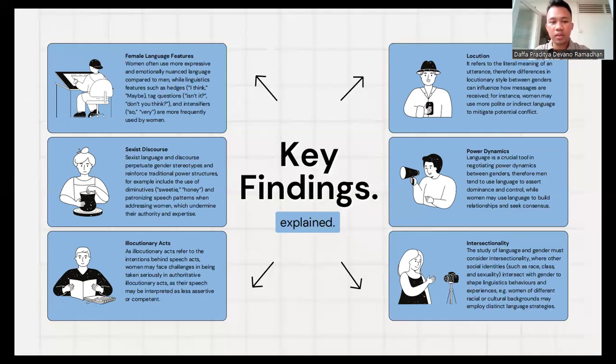The fifth one is power dynamics. Language is a crucial tool negotiating power dynamics between genders. Men tend to use language to assert dominance and control, while women may use language to build relationships and seek consensus.